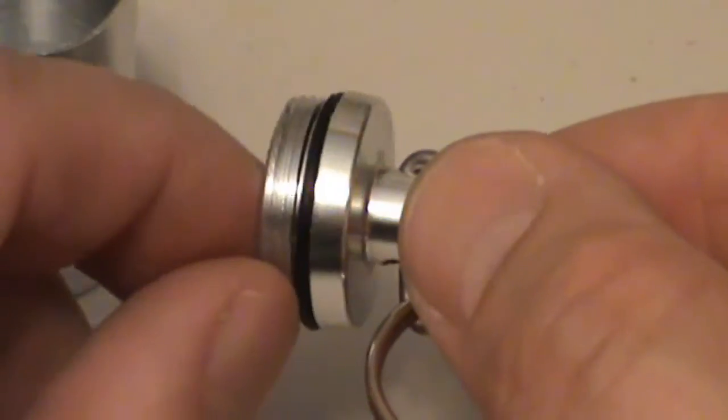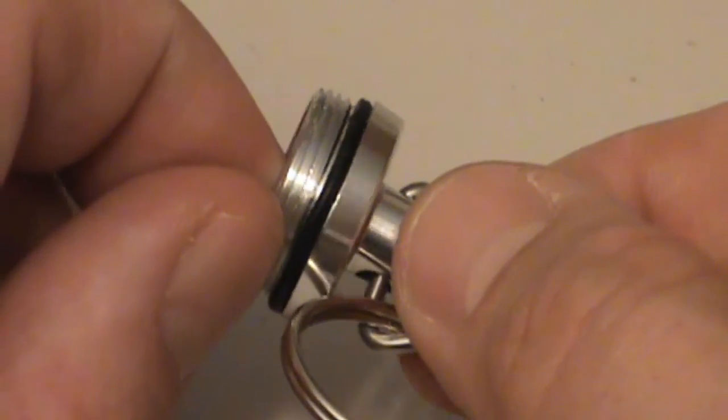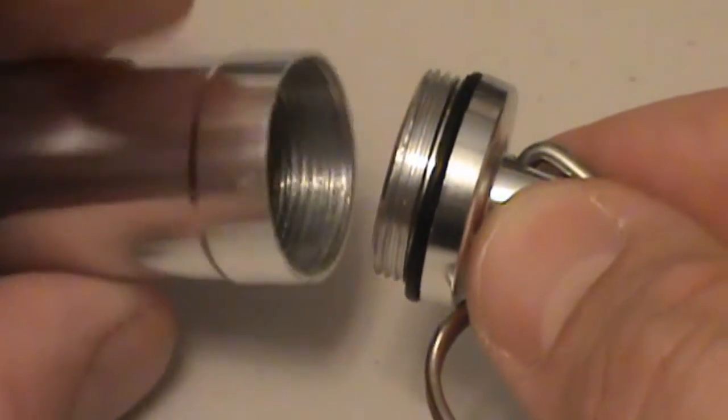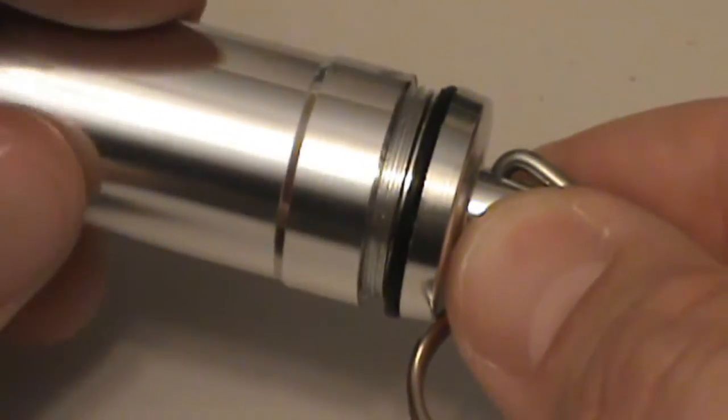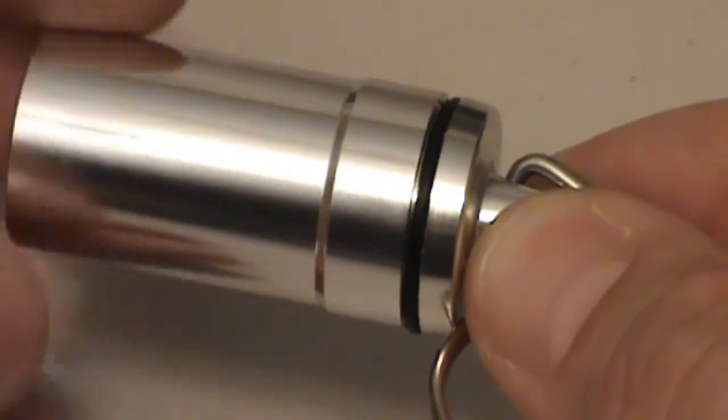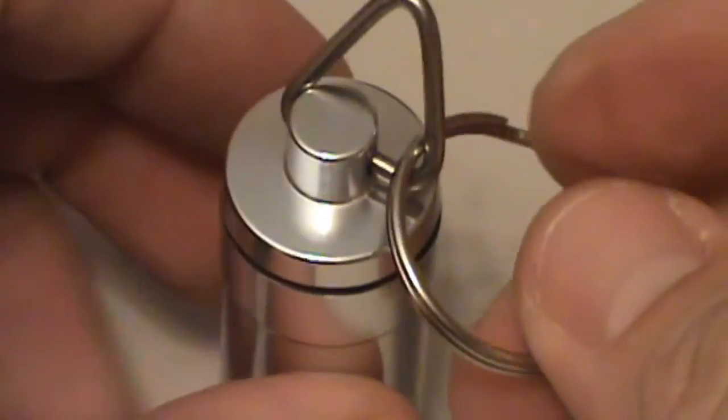You can see the nice heavy duty o-ring which makes this container waterproof, one of the benefits of using this as a tinder container. And I've never had an issue with this cross threading itself. It's always screwed together nicely.